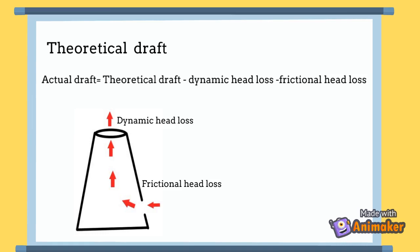It should be noted that the draft calculated was a theoretical draft. In an actual chimney, there is dynamic head loss due to the sudden exit of the flue gases, and also frictional head loss along the walls of the chimney. So the actual draft equals theoretical draft minus the dynamic head loss minus the frictional head loss. Therefore, the theoretical draft is always greater than the actual draft obtained through a chimney.